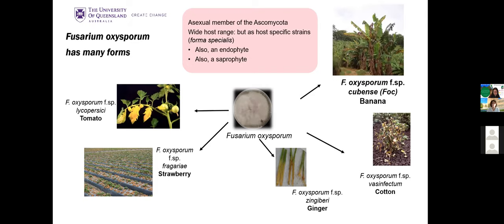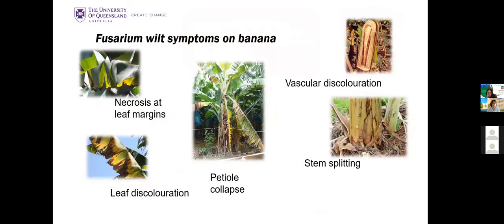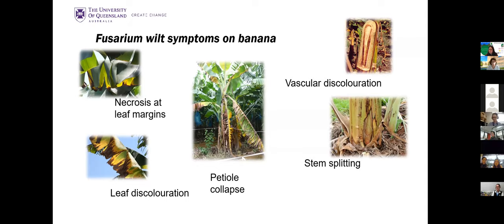Here are some ladyfinger plants with Fusarium wilt. The symptoms on banana include necrosis at the leaf margins, leaf discoloration, petiole collapse forming a skirt, and stem splitting at the base. The most reliable diagnostic sign is when you cut into the plant and see vascular discoloration — phenolics being produced within vascular tissue in response to the pathogen. Eventually the plant dies, suckers may or may not survive, and you won't get much yield.